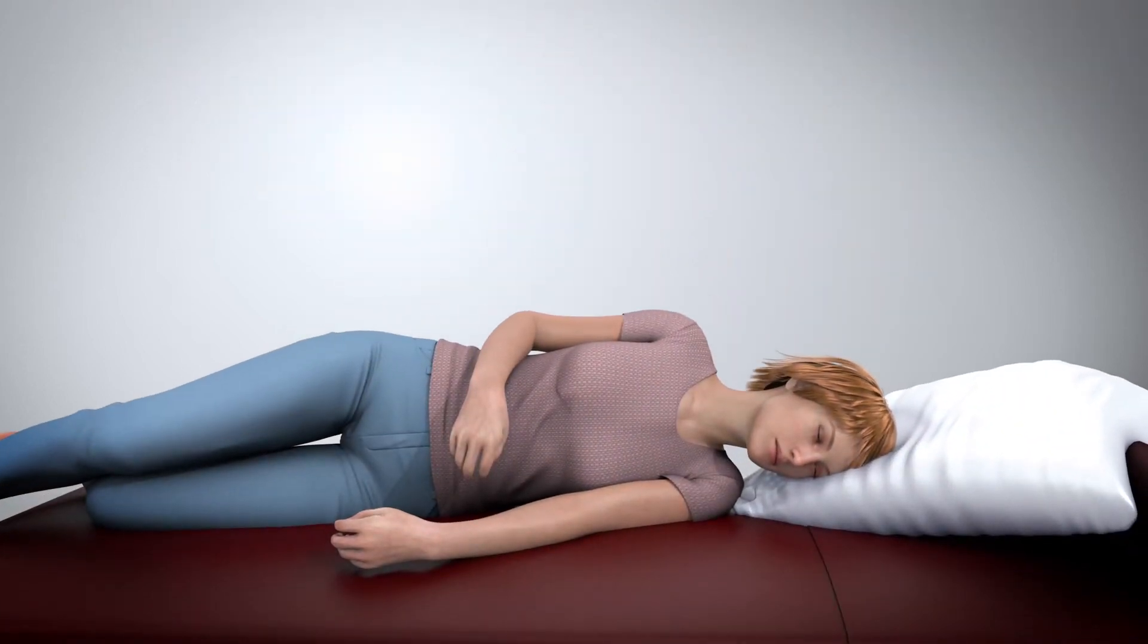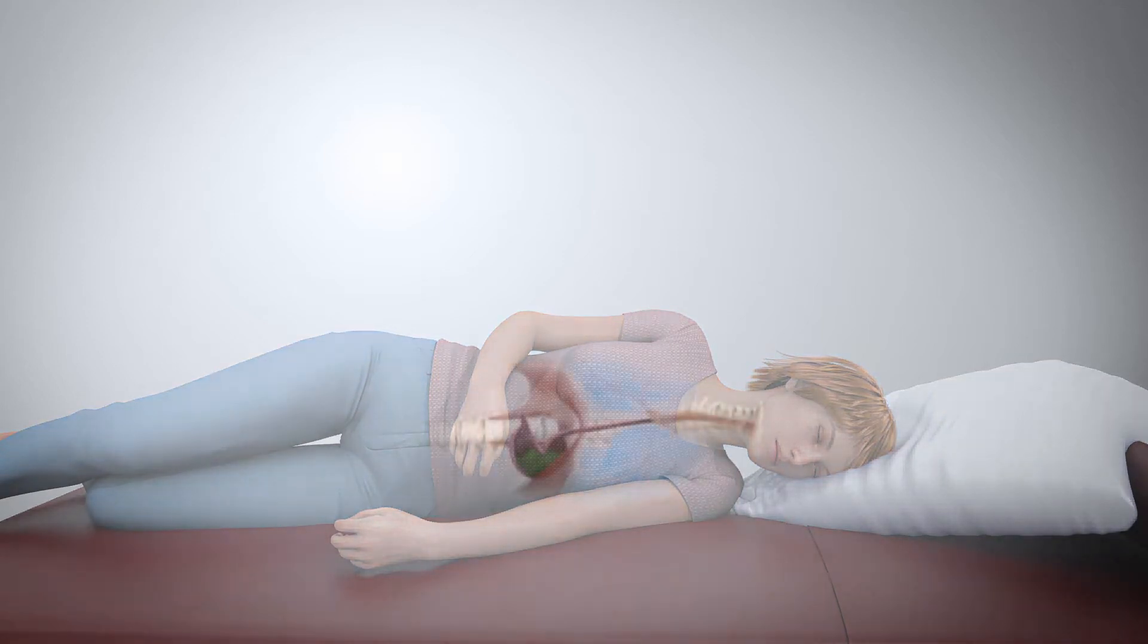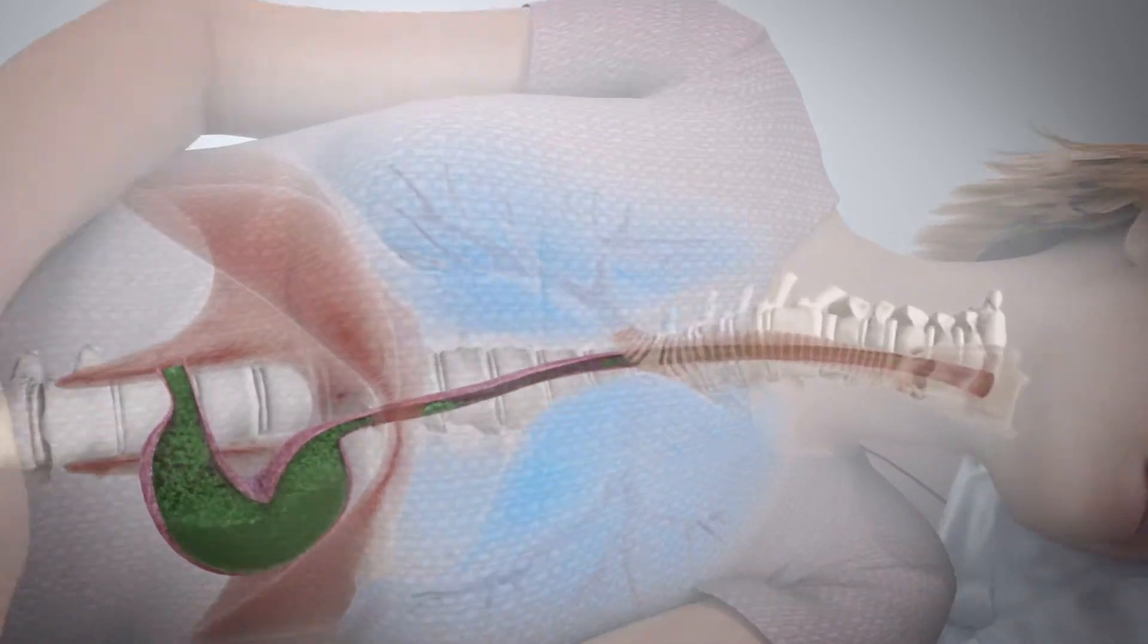Regurgitation of stomach contents into the throat and lungs due to a weak UES happens most often while you are sleeping. It can result in health complications.